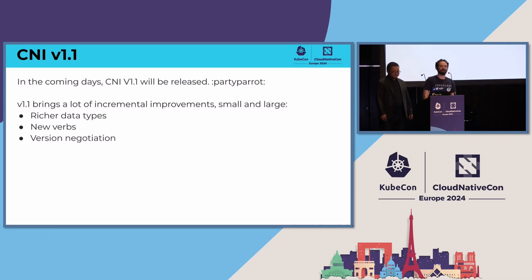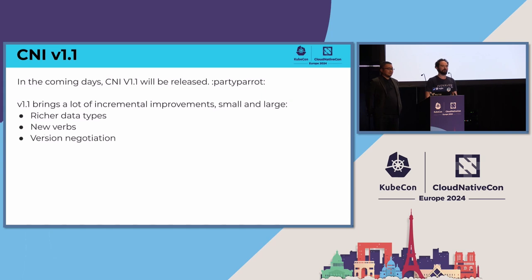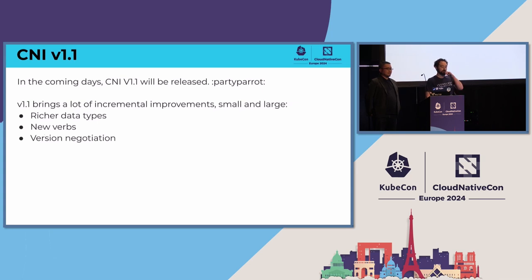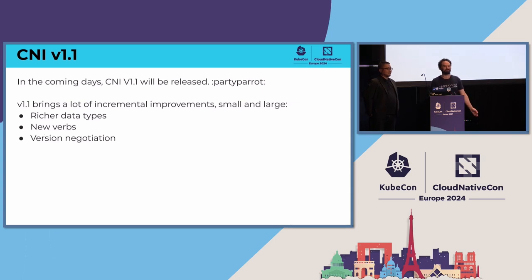Fast forward three years and the CNI project is moving forward. We're about to release version 1.1 of the specification. 1.1 is an incremental improvement — it brings a lot of changes that people have requested, some small, some large. The data types defined in CNI are going to be improved, so the data types are richer. The verbs provided are increasing by two. And we have version negotiation.